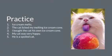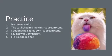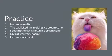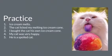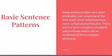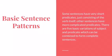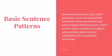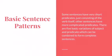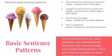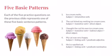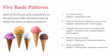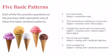Practice identifying the simple and complete subject as well as the predicate in each of the examples on this slide. Some sentences have very short predicates, just consisting of the verb itself, while other sentences have more complicated predicates. There are five basic variations of subject and predicate which can be combined to form complete sentences. Each of the five practice questions you just completed represents one of the five basic sentence patterns. In the following slides, we'll learn about each type in the order they are presented.